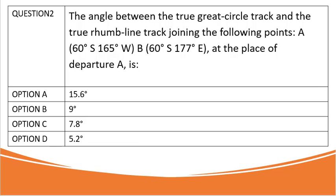Question 2: The angle between the true great circle track and the true rhumb line track joining the following points - A which is 60 degrees south and 165 degrees west, and B which is 60 degrees south 177 degrees east, at the place of departure A is. And the options are as given.